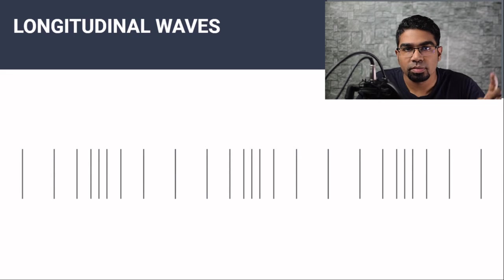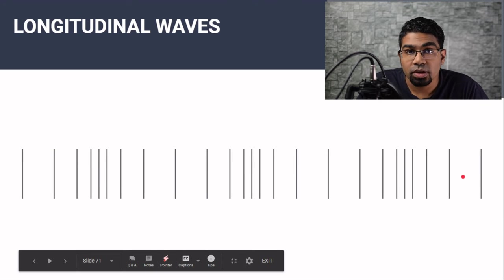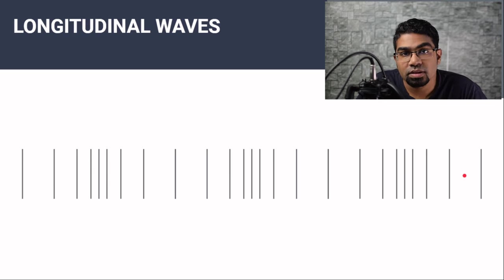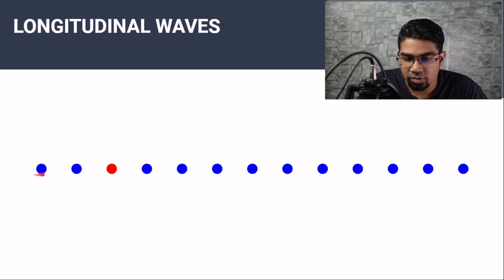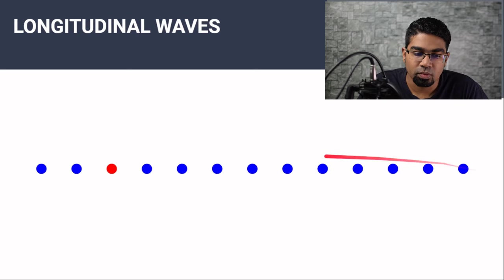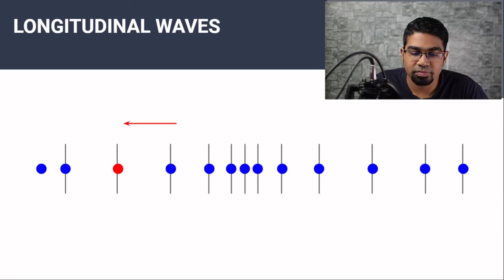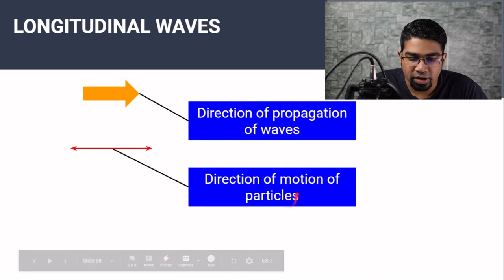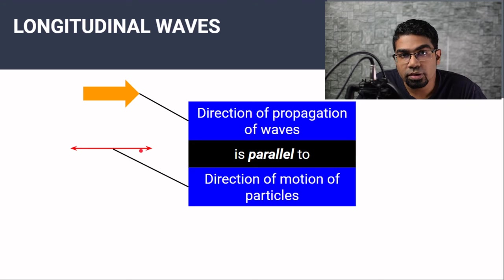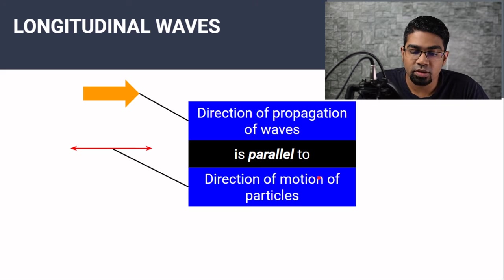Longitudinal waves do not form that familiar pattern of waves. Instead, they look like this. An example of a longitudinal wave is sound waves. When a longitudinal wave passes through particles — let's say these are particles of air — instead of moving up and down, the particles move left and right. The direction of propagation of the waves and the direction of motion of the particles are parallel. So for a longitudinal wave, the direction of propagation of the wave is parallel to the direction of motion of particles.